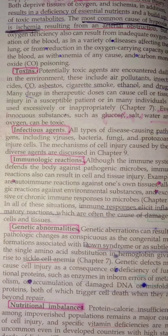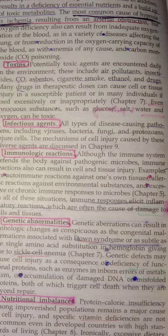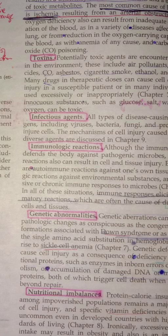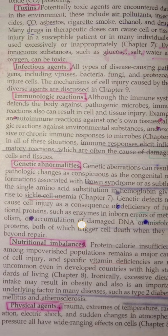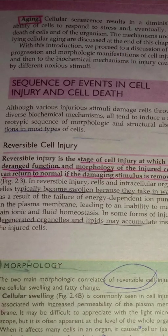In genetic abnormalities, like sickle cell anemia or Down syndrome, these all lead to cell death or cell injury. In nutritional imbalances, like in type 2 diabetes there is sugar or insulin imbalance. Atherosclerosis occurs when we take more cholesterol, leading to clot formation in vessels. Physical agents include temperature, radiation, chemical agents, etc. Aging also leads to weak cell response — after a specific age, cells start to die or become weak.